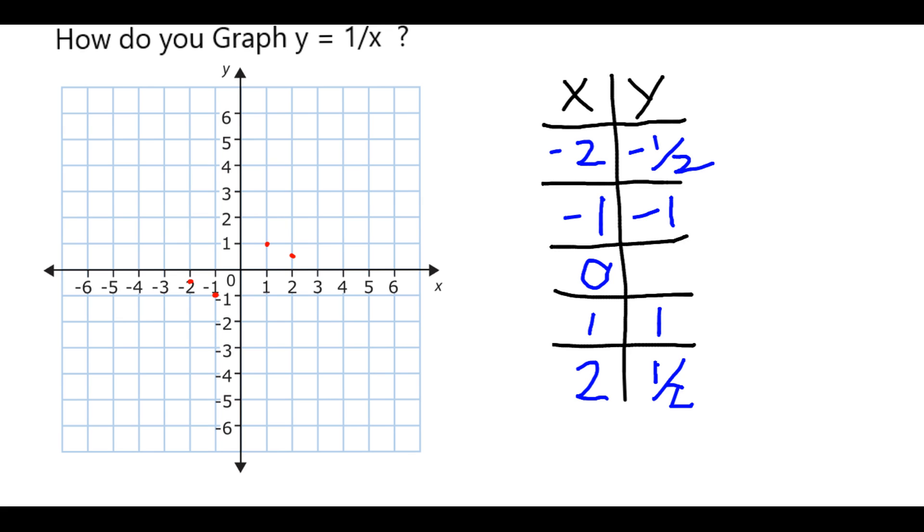Returning to the value of 0, 1 over 0 is going to be undefined. Anything divided by 0 is not a defined mathematical operation, so that's not really going to help us either. So let's pick a few more values and see if we can get a better idea what's going on.